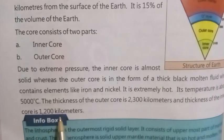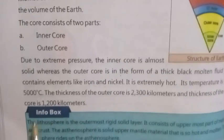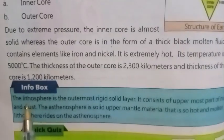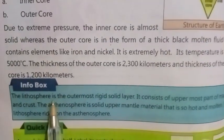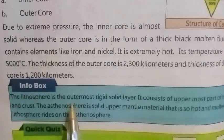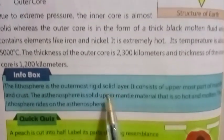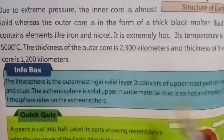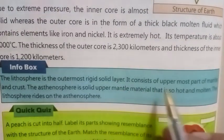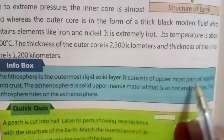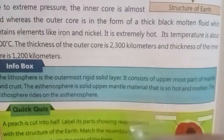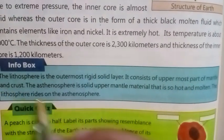The thickness of the outer core is 2,300 kilometers and the thickness of the inner core is 1,200 kilometers. Info box: The lithosphere is the outermost rigid solid layer. It consists of the uppermost part of the mantle and the crust.